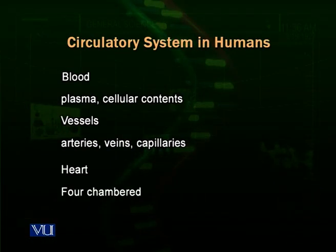Plasma is about 92 percent water and has many dissolved proteins, enzymes, hormones, metabolic waste products, oxygen, carbon dioxide, and other gases. Blood also has cellular contents: different kinds of blood cells.